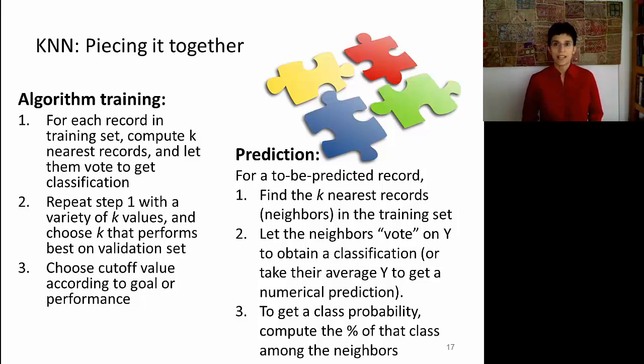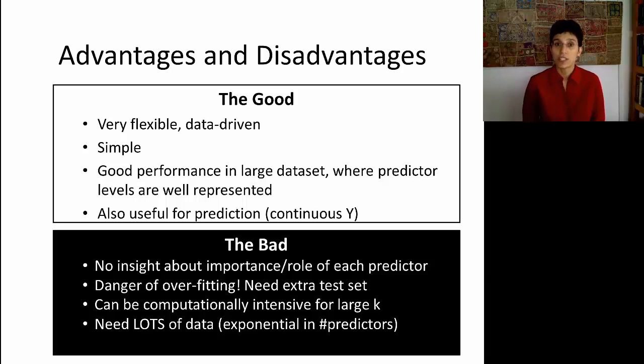So here are the advantages and disadvantages. K-NN is very flexible, and it's also very data-driven. You'll notice that it's quite automated. You hardly had to specify anything. It's simple to explain to people, and it actually works reasonably well if you have sufficient data. The other condition is that we need to have sufficient representation of the different predictor information. So if I'm classifying people based on neighbors in terms of their predictor profiles, I have to have sufficient representation of the different types of predictor profiles in my training data. As I mentioned earlier on, we can use K-NN either for classification or for predicting a numerical Y.